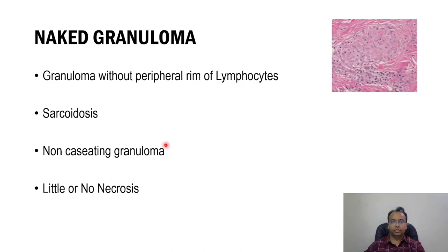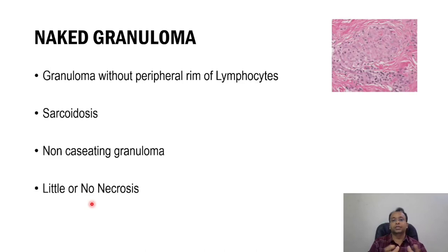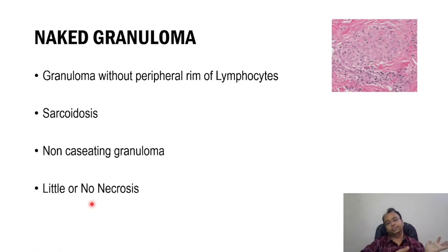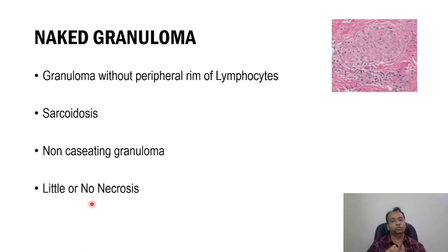Naked granuloma means they don't have lymphocytes — the peripheral rim of lymphocytes is absent. It is classically seen in sarcoidosis and is also a non-caseating granuloma — caseating necrosis is not present. Remember, dear students, in any granulomatous inflammation caseous necrosis is usually present, but in sarcoidosis it is absent. Sometimes in tuberculosis also, 2 to 5% of cases have no caseous necrosis — so it is not an absolute rule.